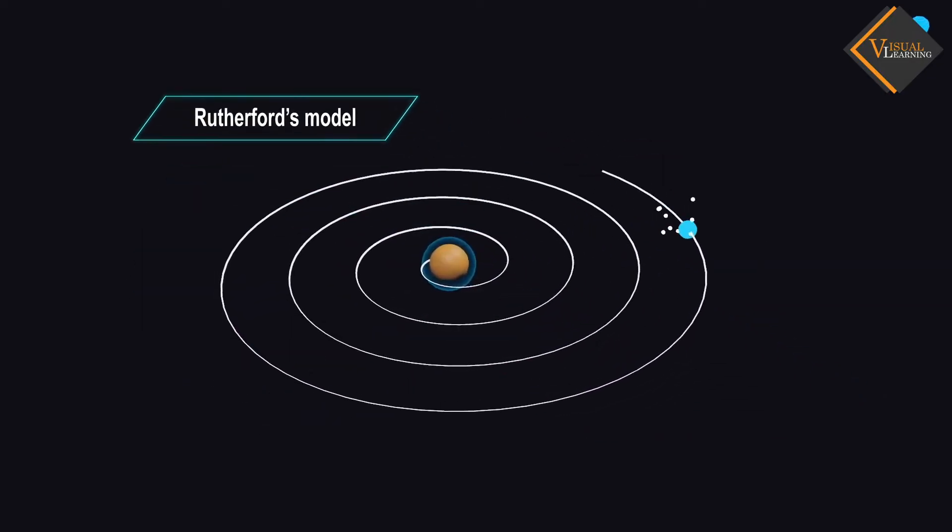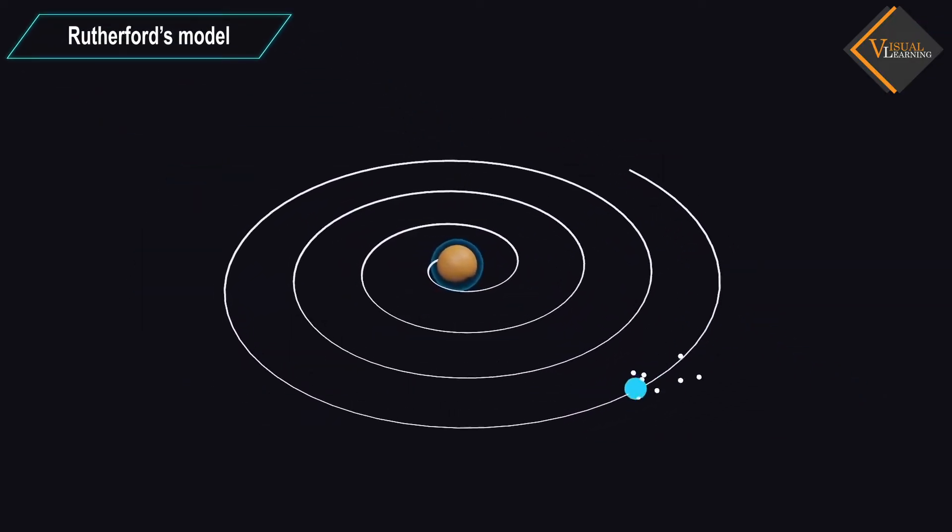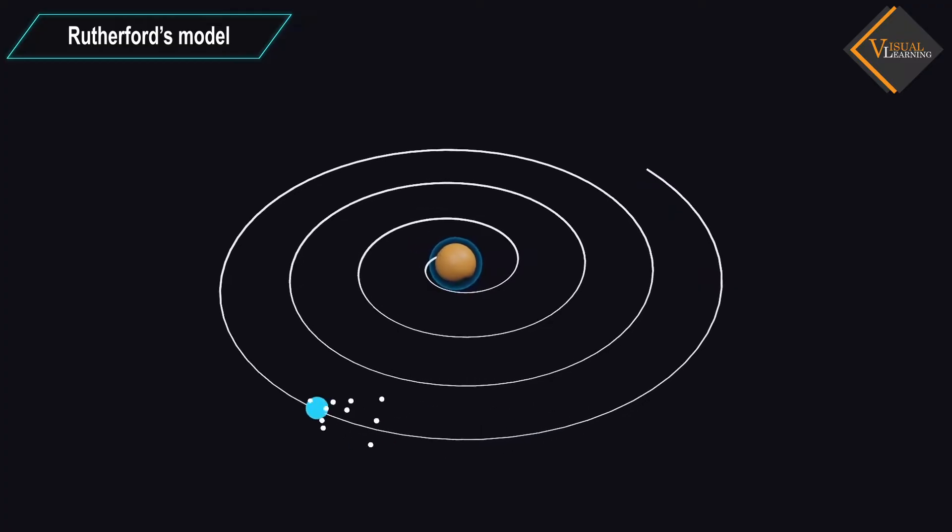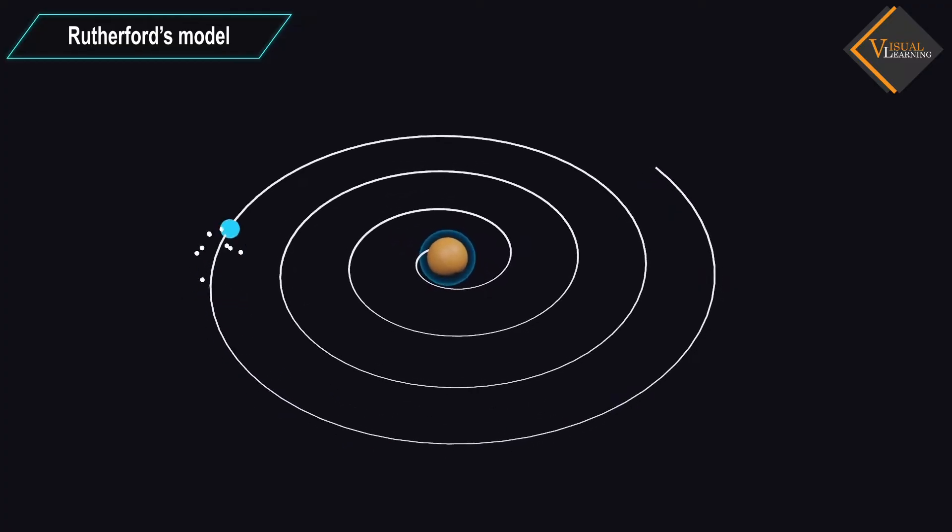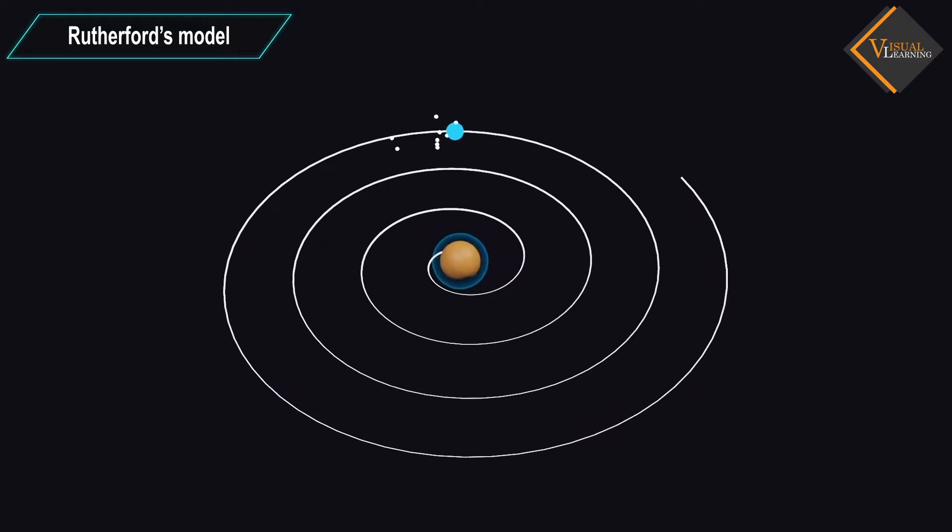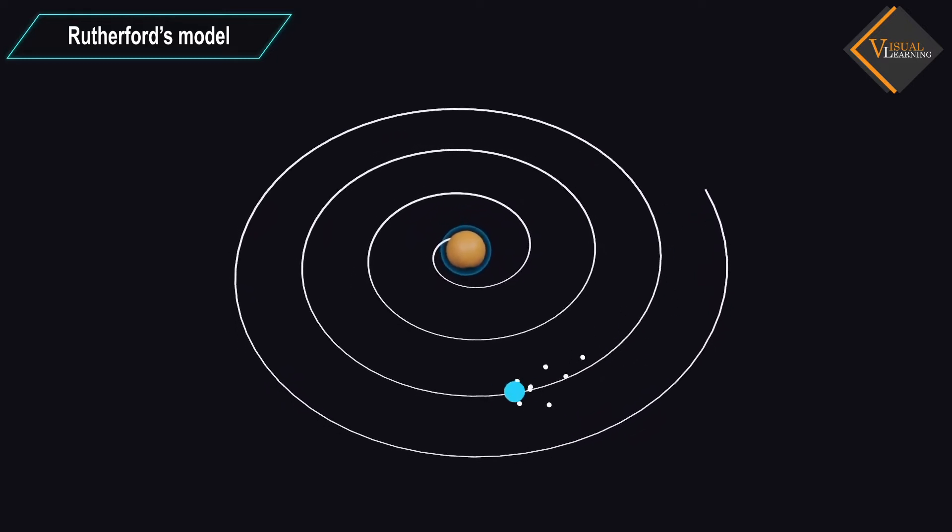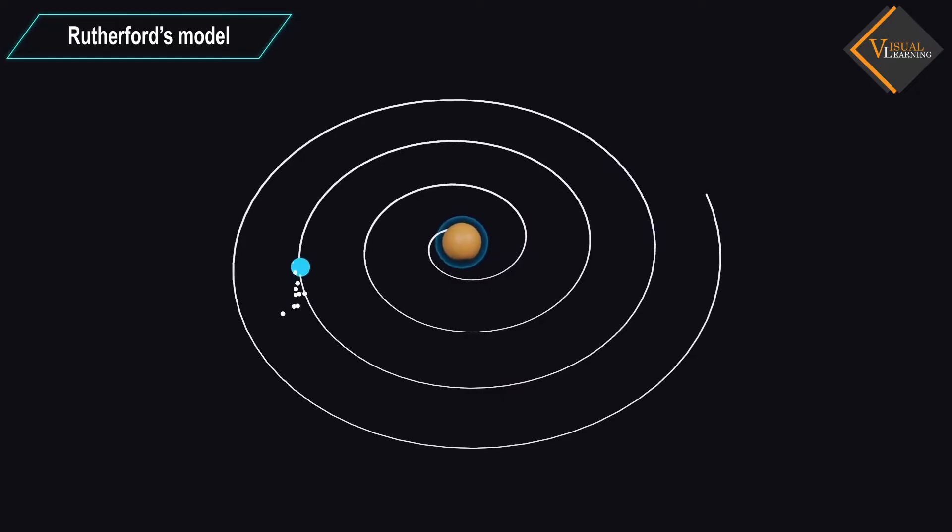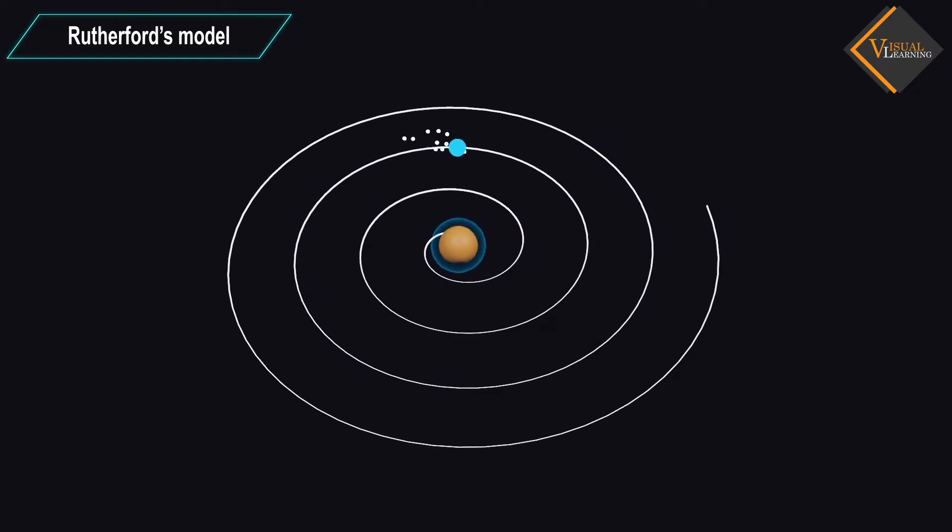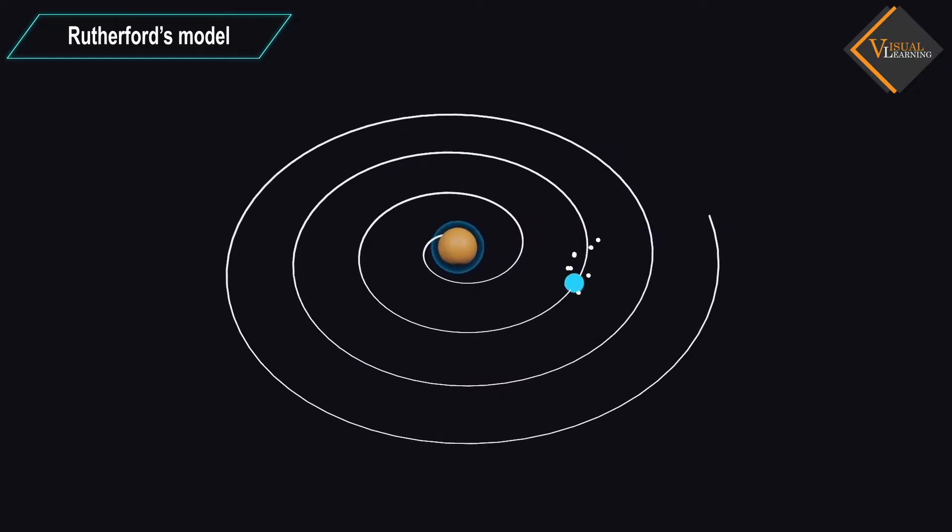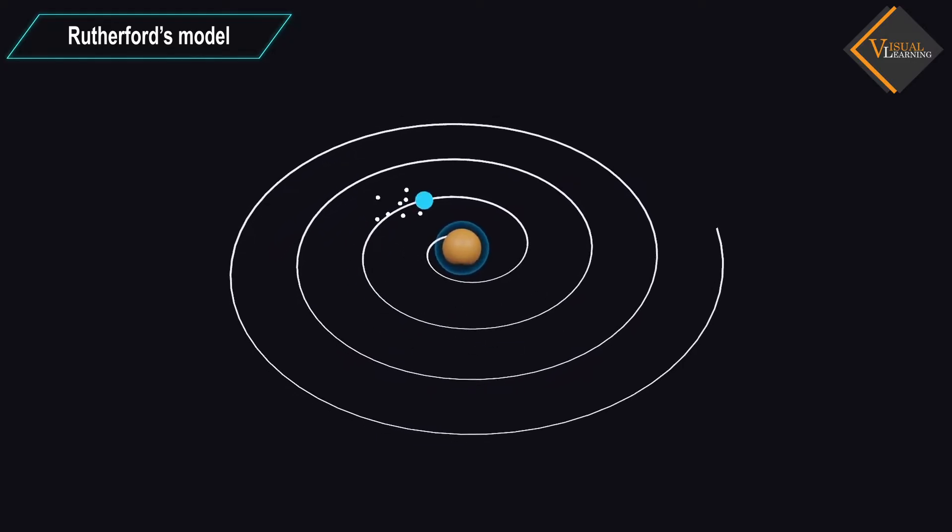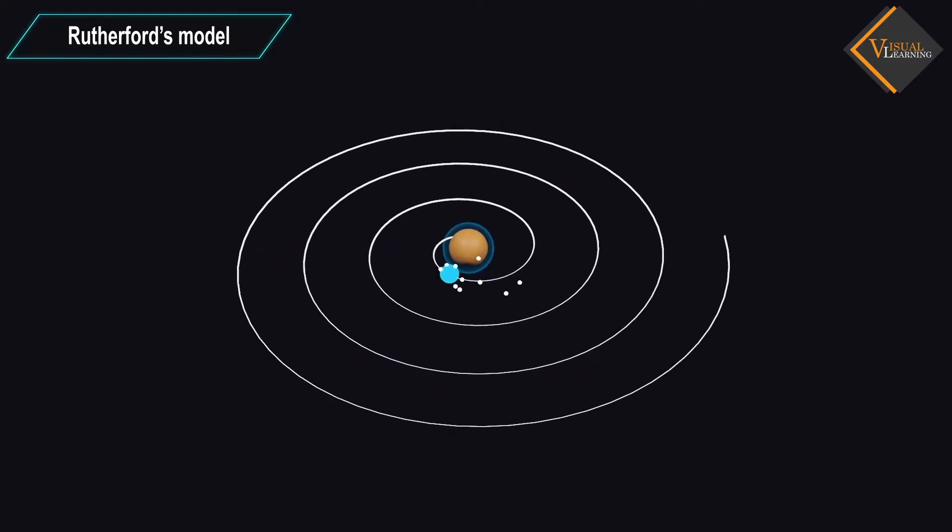The revolution of the electron in a circular orbit is not expected to be stable. Any particle in a circular orbit would undergo acceleration. During acceleration, charged particles would radiate energy. Thus, the revolving electron would lose energy and finally fall into the nucleus.